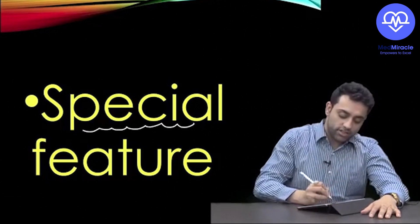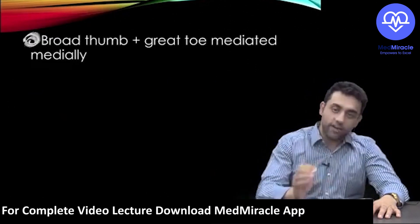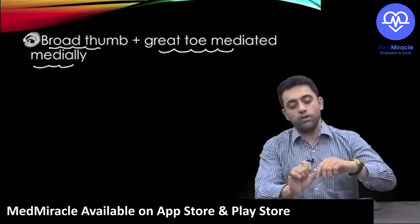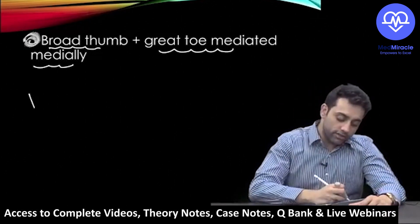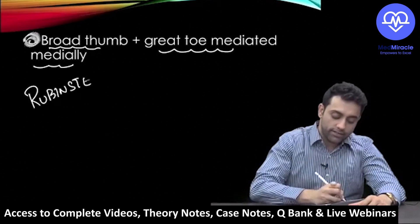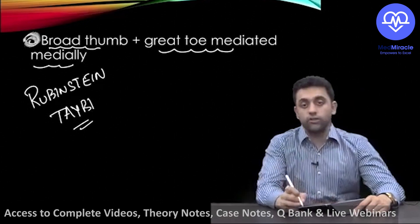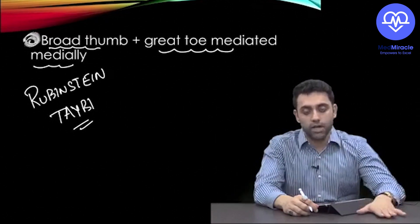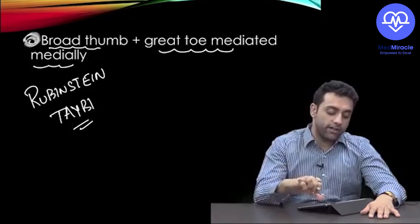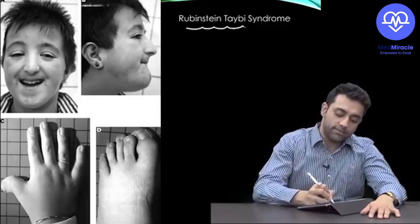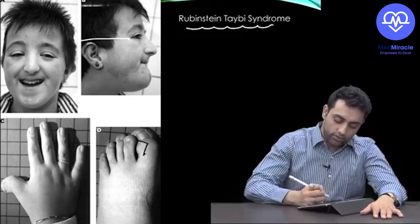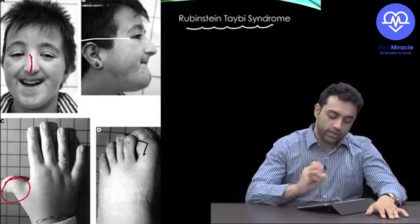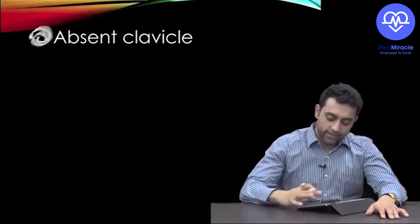Next, if I say broad thumbs with the great toe deviated medially, what syndrome do you think of? You should think of Rubinstein-Tybee Syndrome. Key features: broad thumbs, great toe deviated medially, low-set ears, beaked nose, and high arches.